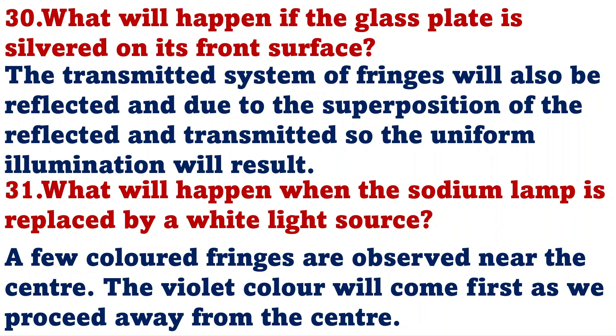What will happen if the glass plate is silvered on its front surface? If the glass plate is silvered, then the transmitted system of fringes will also be reflected and due to the superimposition of the reflected and transmitted, uniform illumination will result.